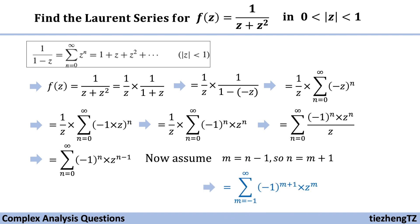Therefore we get the sum where m starts from negative 1, because when n is 0, m is negative 1. So the final format is the sum from m equals negative 1 to infinity of negative 1 to the power of m plus 1 times z to the power of m. This is the Laurent series for this given function within the given domain.